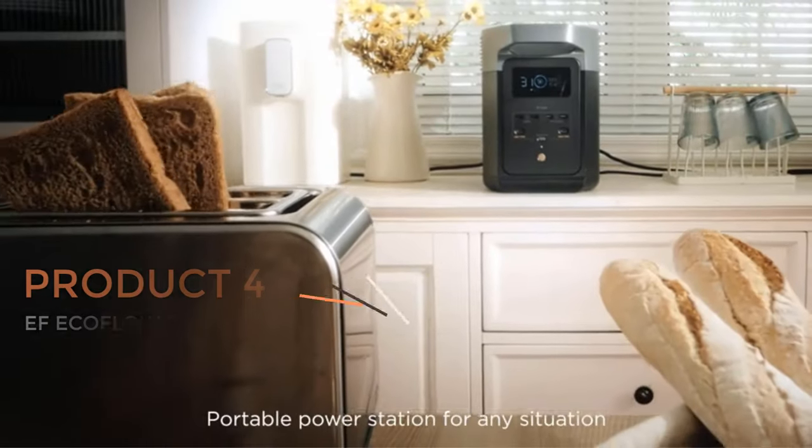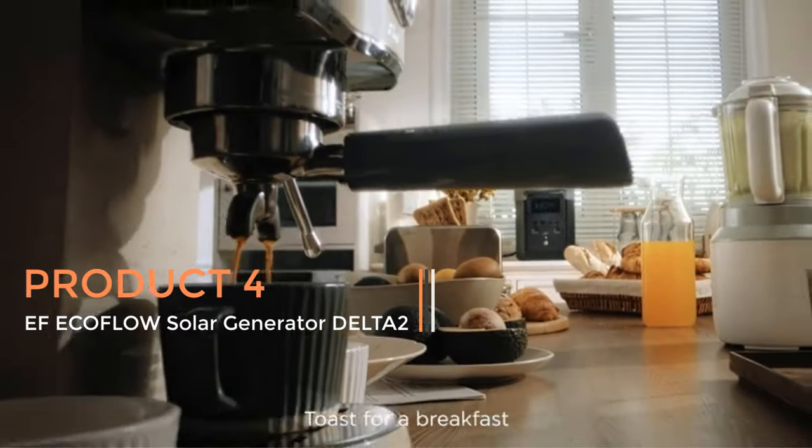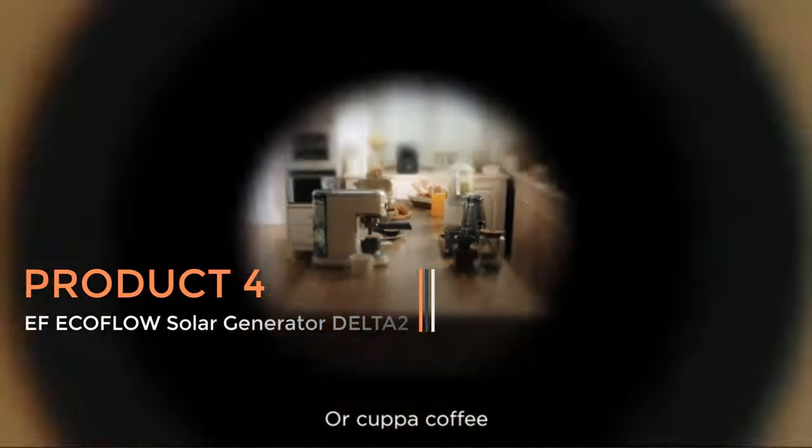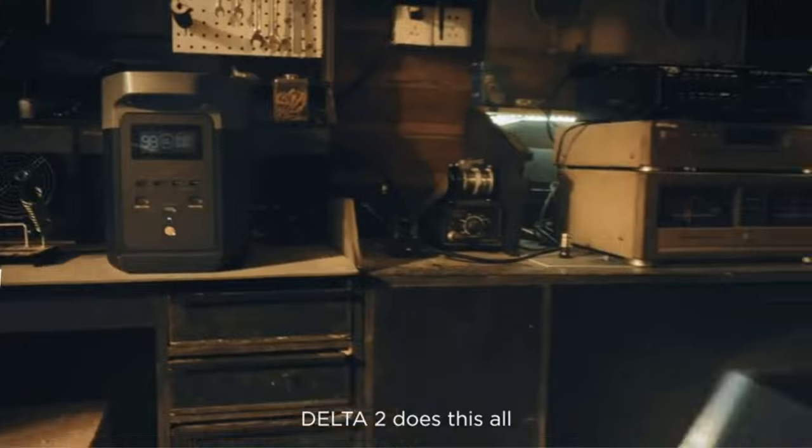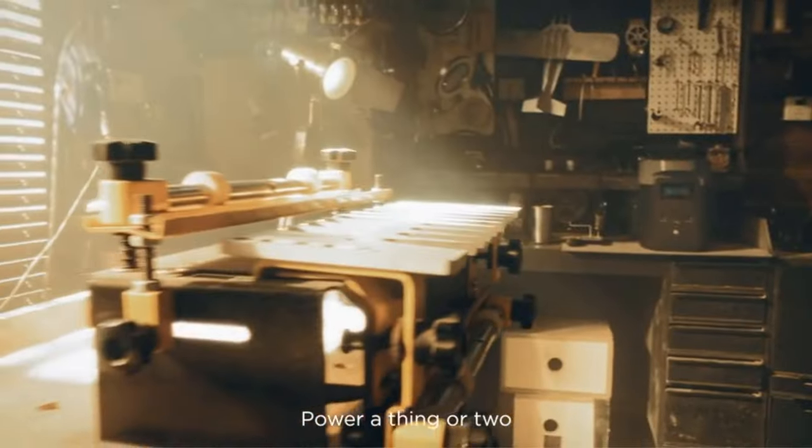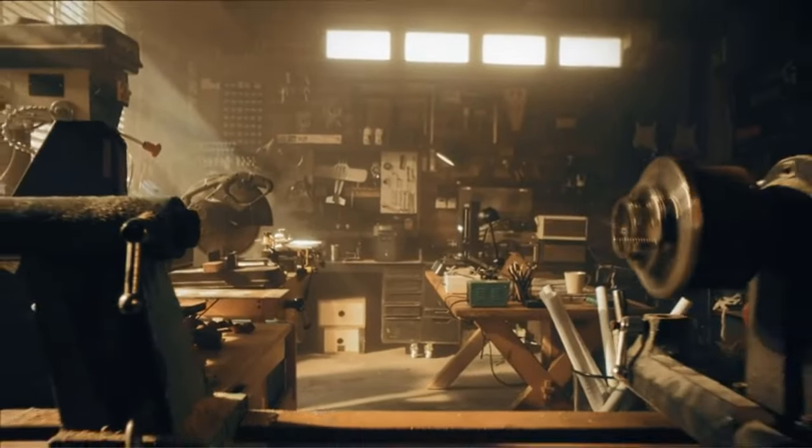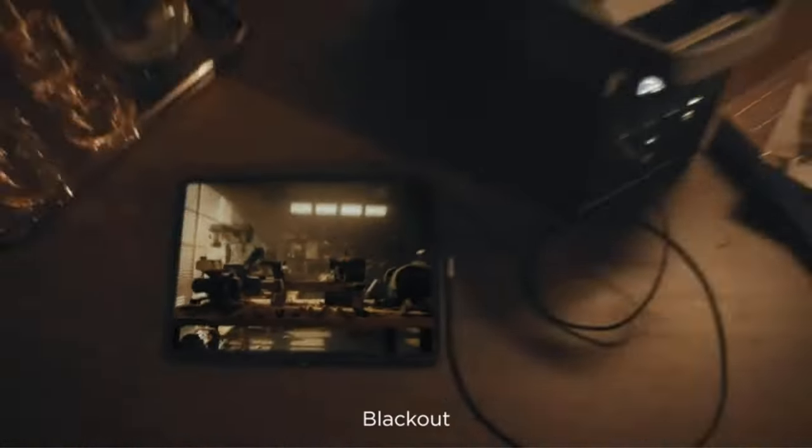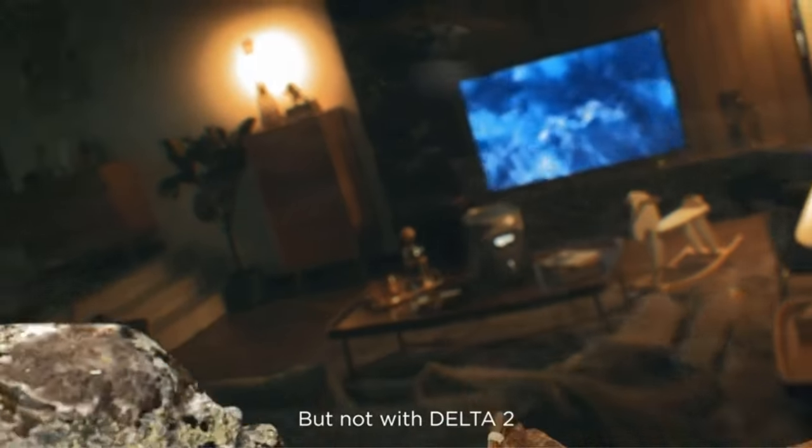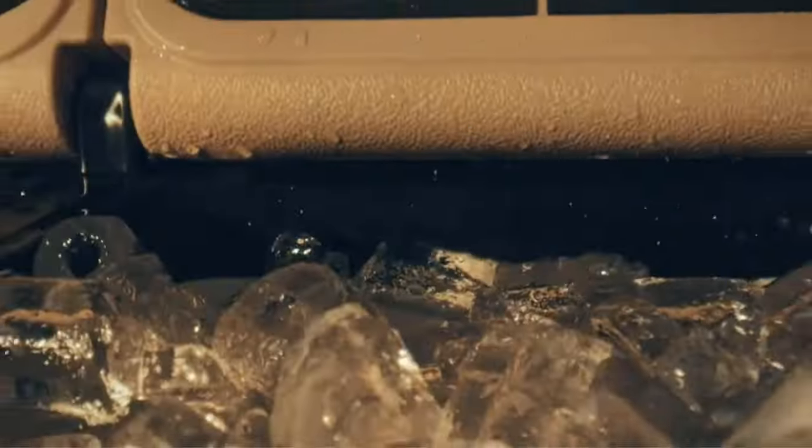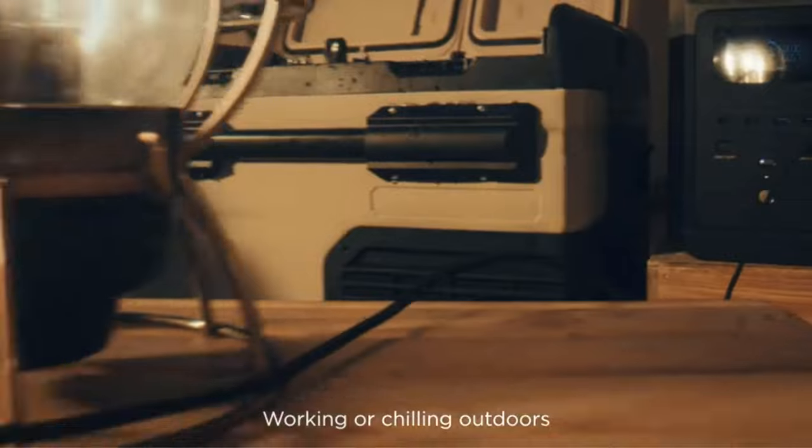Product 4: ECOFLOW Solar Generator DELTA2. The ECOFLOW Solar Generator DELTA2 is a cutting-edge portable power station designed to provide reliable backup power for home use, camping, RVs, and other outdoor activities. It comes equipped with a 220W solar panel, allowing users to harness renewable solar energy to charge its built-in LFP lithium-iron phosphate battery.